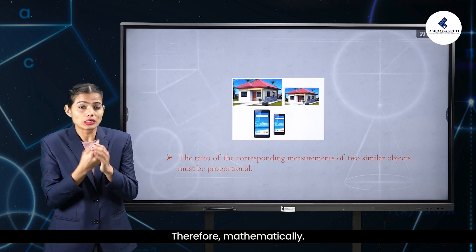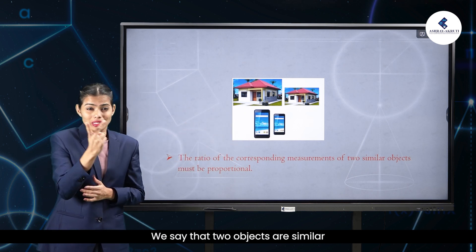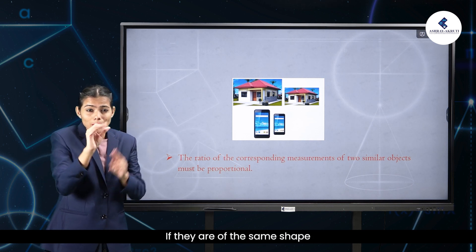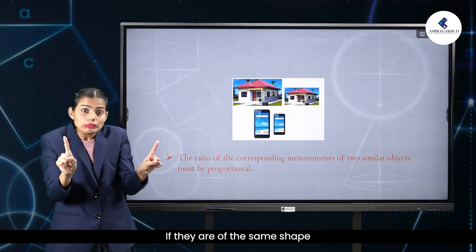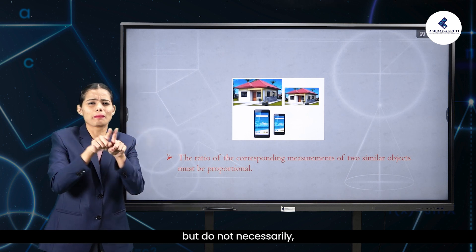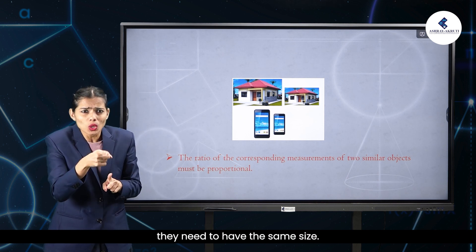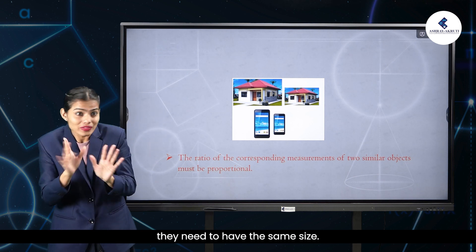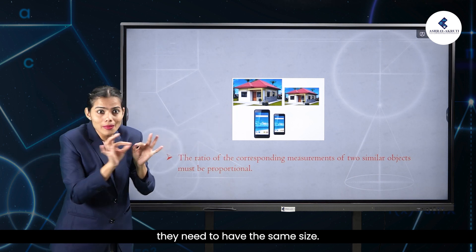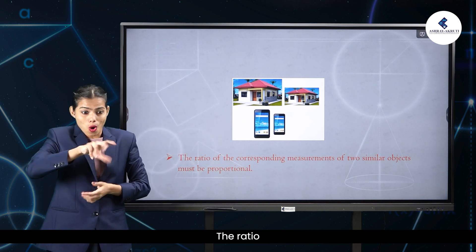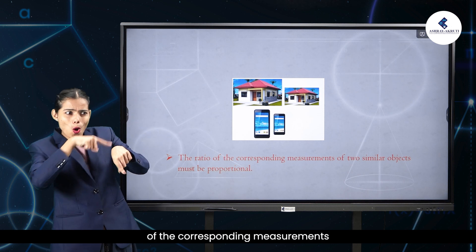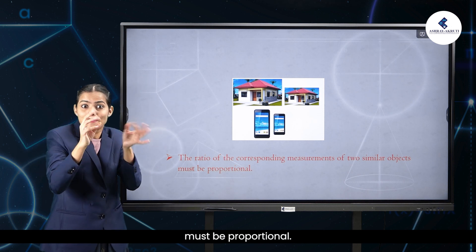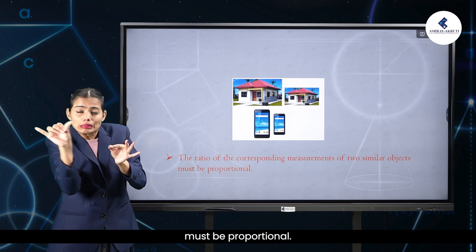Therefore, mathematically, we say that two objects are similar if they are of the same shape but do not necessarily need to have the same size. The ratio of the corresponding measurements of two similar objects must be proportional.